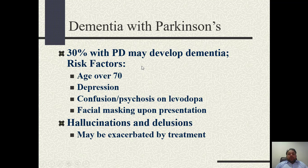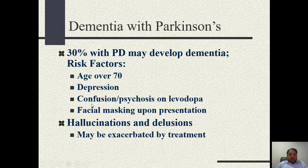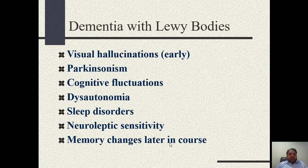Parkinson's disease may be associated with dementia. About 30 percent of patients with Parkinson's disease develop dementia, usually after two years of onset of Parkinson's disease. Hallucinations and delusions may occur as part of Parkinson's dementia.